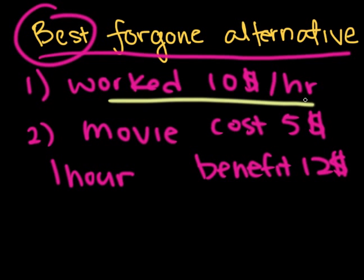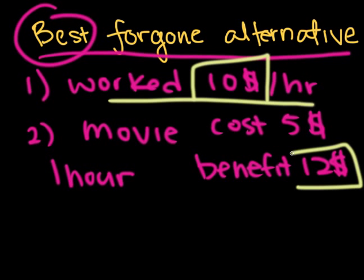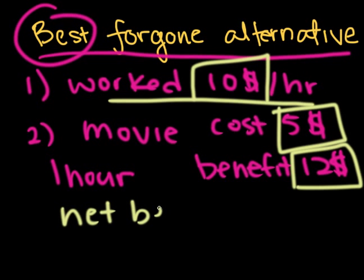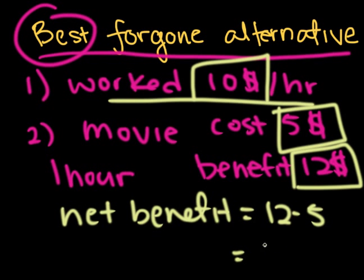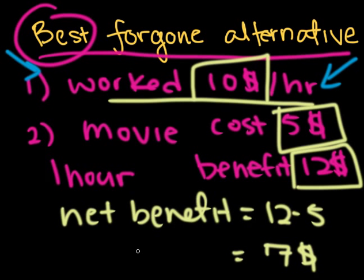Working for an hour would have given him a net benefit of $10. However, if he watches a movie, he would get $12 of benefit, but it cost him $5 to watch it. So the net benefit from the movie equals $12 minus $5, which equals $7. So which one of these two choices would be his best alternative? He would get $10 of net benefit from working, but only $7 of net benefit from watching the movie. So his best foregone alternative would be working.